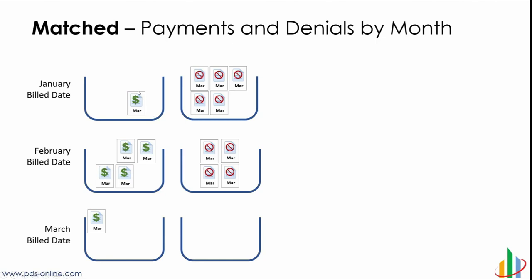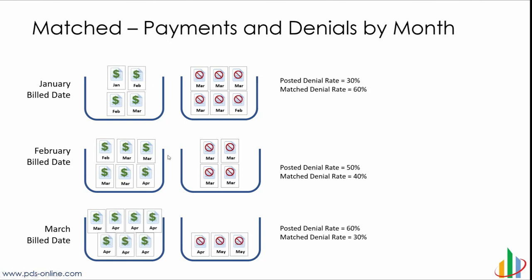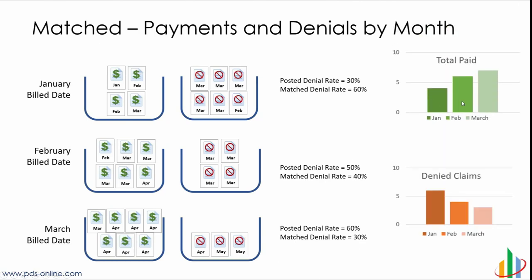To really understand what's going on from a management perspective, we do what's called matched payment denials. We take everything that came in in March but put it back to the month it actually billed out — matching denials and payments back to the bill date. As we fill in the puzzle, in March we may not get payments or denials until April or May, given how long payers take to reimburse or deny a claim. When we use a matched denial rate — calculated by PDS restaging that denial data — we now see a 60% matched denial rate in January, 40% in February, and 30% in March: the exact opposite of the posted denial rate.